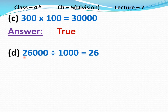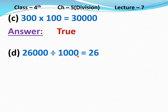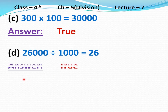Part D: 26,000 divided 1000 equal to 26. There are three zeros in the dividend and three zeros in the divisor, so these zeros will be cut, leaving 26 divided 1, which equals 26. This statement is true. Answer: True.